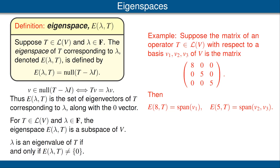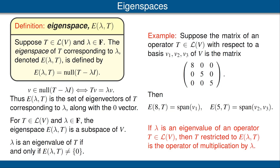Let's look at an example. Suppose that the matrix of an operator t on v with respect to a basis v1, v2, v3 is the matrix shown here. Note that this is a diagonal matrix. It's easy to verify that the eigenspace corresponding to the eigenvalue 8 is the span of the first basis vector v1, and that the eigenspace corresponding to the eigenvalue 5 is the span of the second and third basis vectors. You should pause the video and verify these claims, and also verify that t restricted to the eigenspace e of lambda t is just the operator of multiplication by lambda.